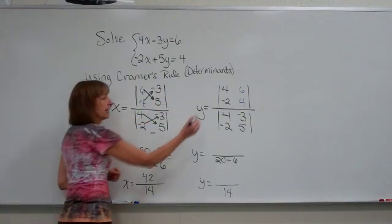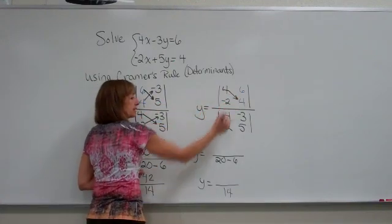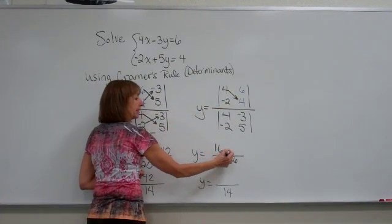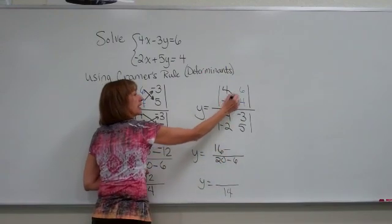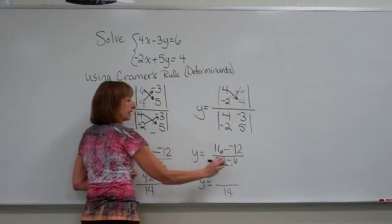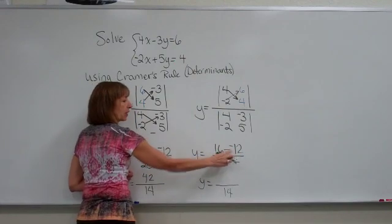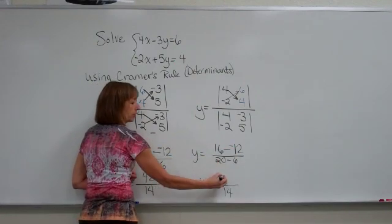For the numerator for y, we have 4 times 4 is 16, minus, for the determinant formula, negative 2 times 6 is negative 12, and 16 minus negative 12 is 16 plus 12, or 28.